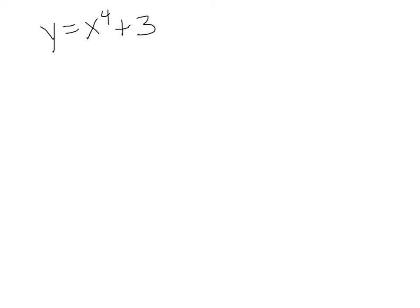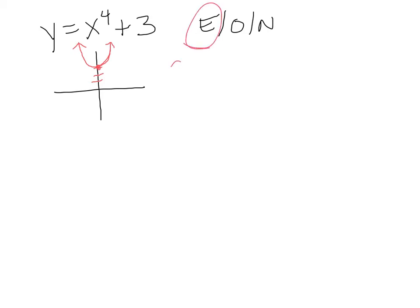Let's look at y = x⁴ + 3 and think about whether it's even, odd, or neither. By transformations, this has been shifted up 3. x to the 4th power looks like a flattened-out parabola, and y = x⁴ + 3 is actually symmetric about the y-axis — so it is even. You could also check it using the algebraic formulas.